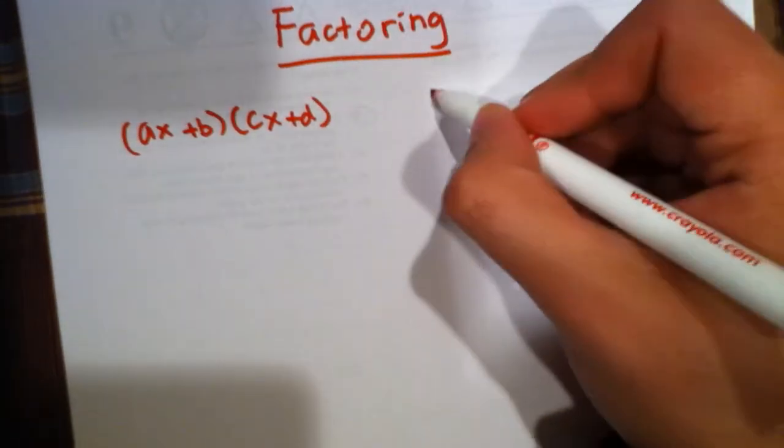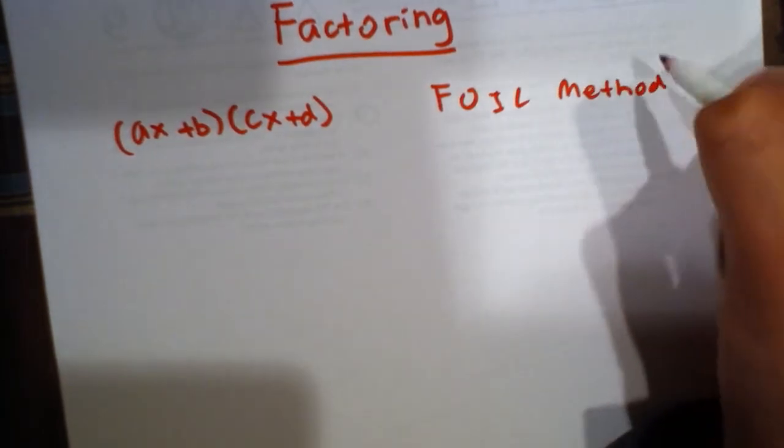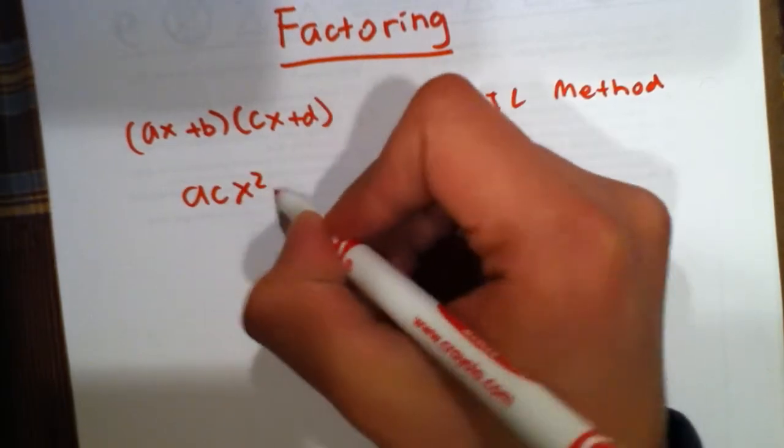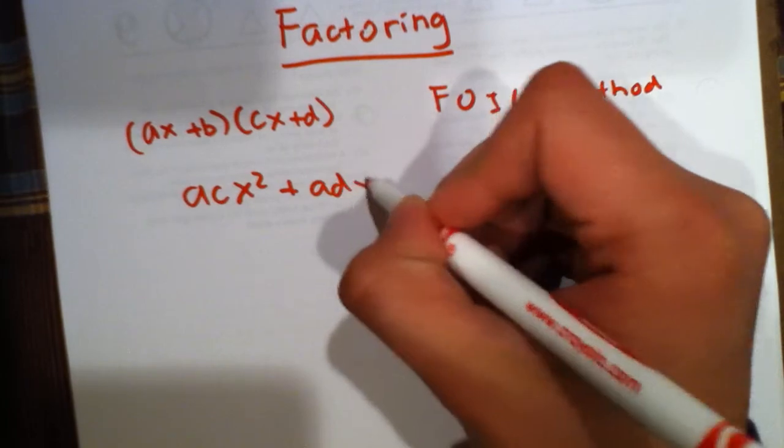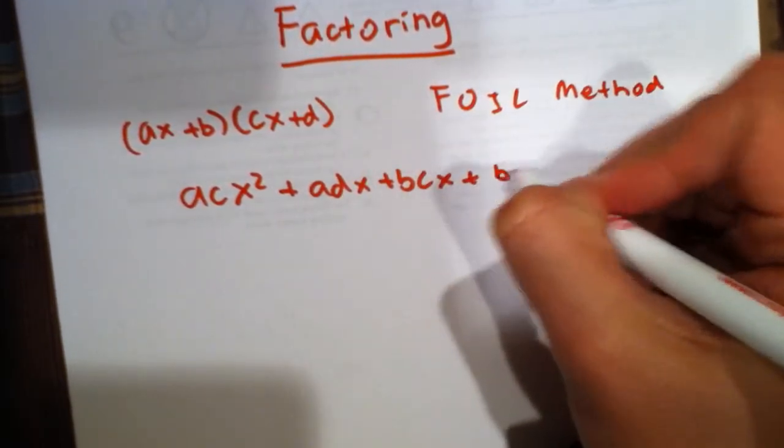Now, once we use the FOIL method to multiply this out, we get ac x squared plus ad x plus bc x plus bd.